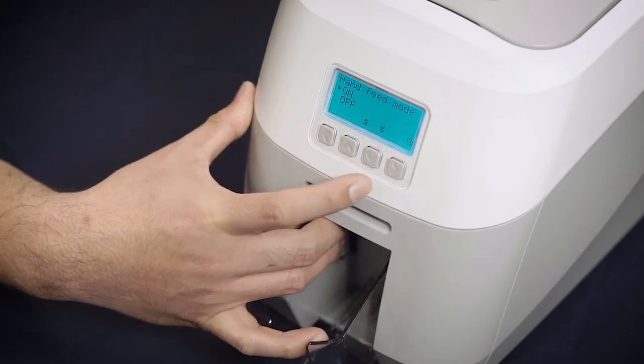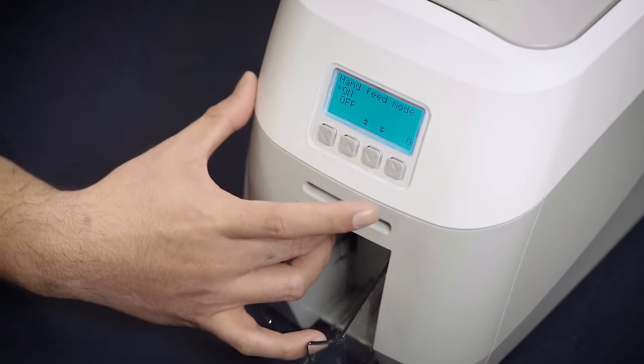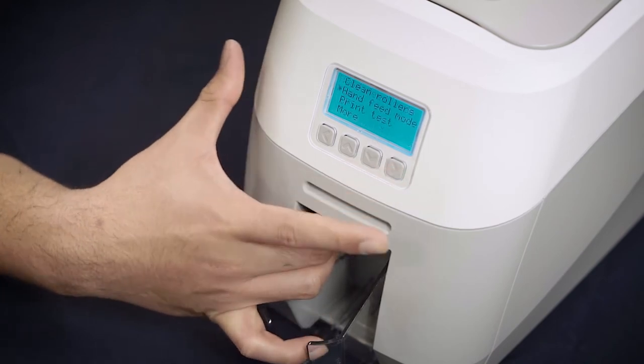and select by clicking the right hand button. If the hand feed mode is set to off, scroll upwards so the arrow is pointing at on, and click OK.